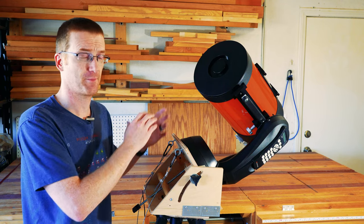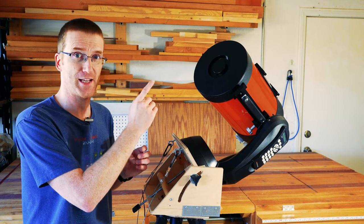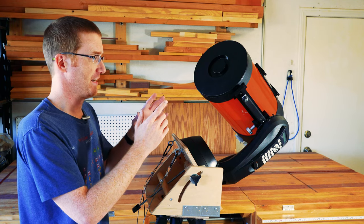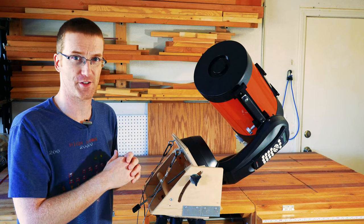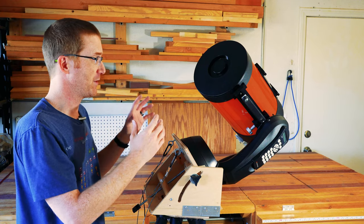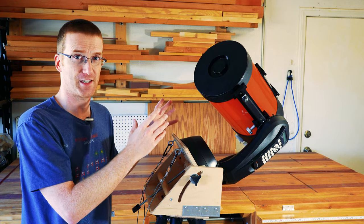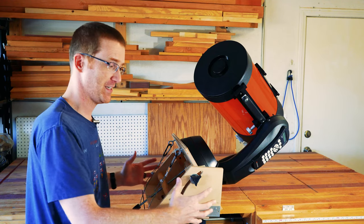But when you tell it that you're ready to do the polar alignment, what it does is it will point to a star. So if you are pointed properly at Polaris, then given your location and the time of day and stuff, then it should already know where all the stars are. So it will slew to where that star should be. And then what you have to do is center that star in the eyepiece, but you don't use the hand controller.